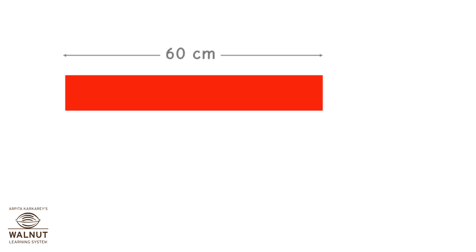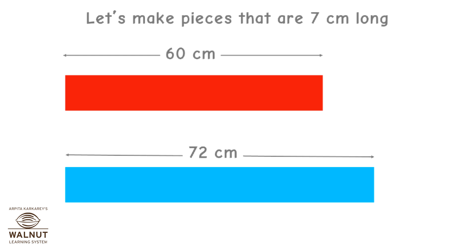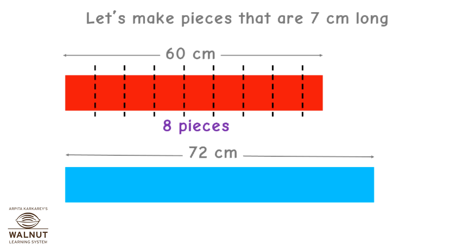We have a red ribbon that is 60 cm long and a blue ribbon that is 72 cm long. Let's make pieces that are 7 cm long. If you divide 60 by 7, you will get 8 — that is 8 equal pieces. We have 4 cm of ribbon left.